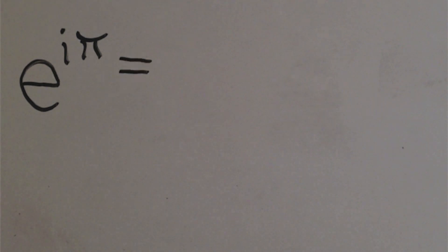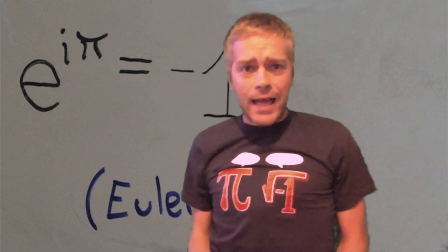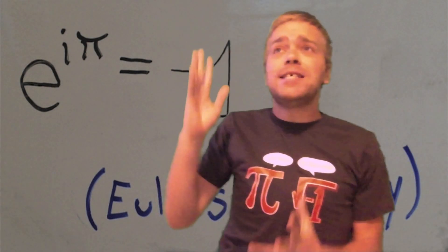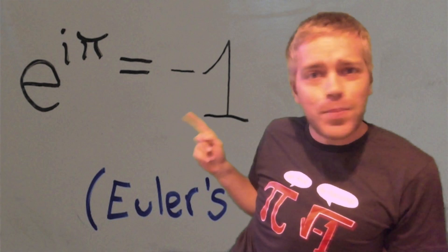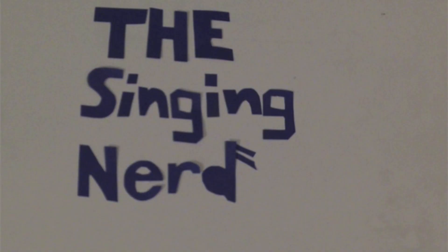E to the i pi is equal to negative 1, man, that is crazy. This equation can't be outdone. How'd all those constants get into one equation? It's like a reunion.